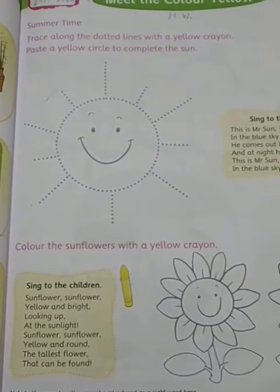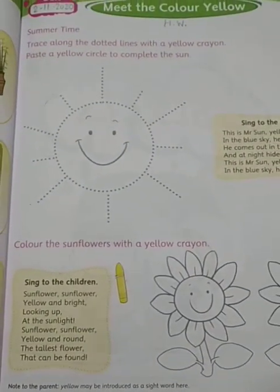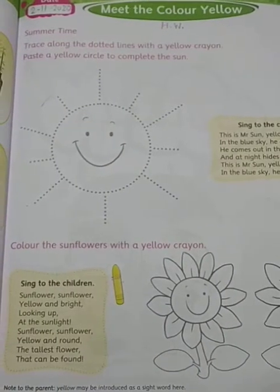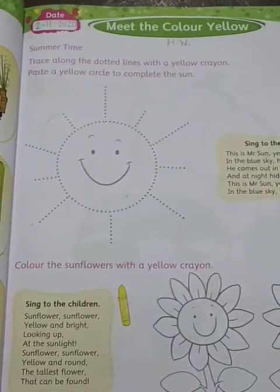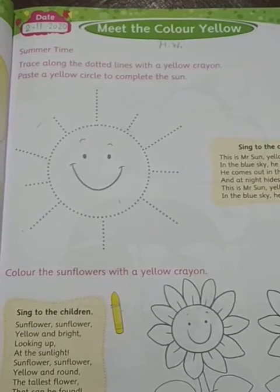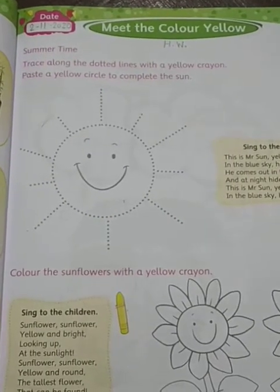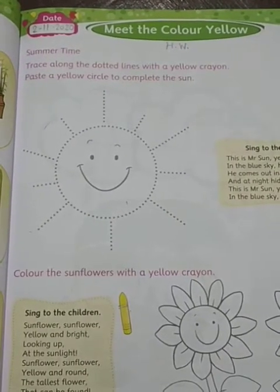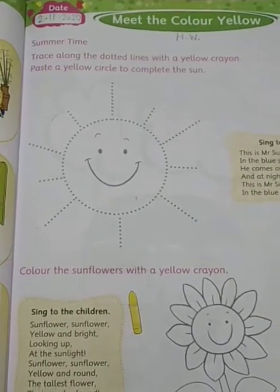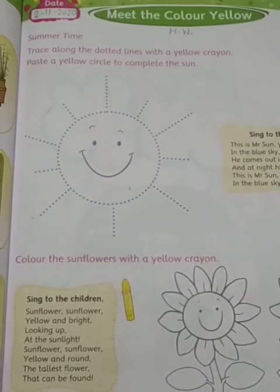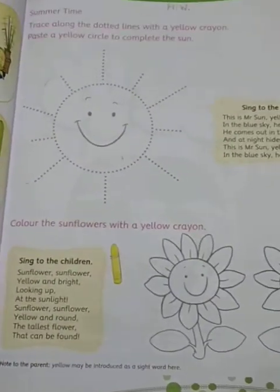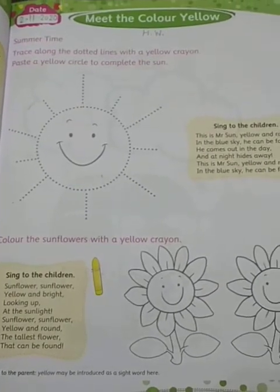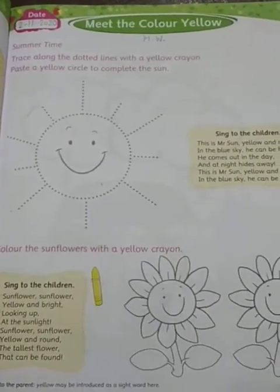Now think about some objects that you have seen in yellow color. The first one is the sun — the sun is always yellow. There are some fruits which are yellow: your favorite fruit mango is yellow, and banana is also yellow. The sunflower is also yellow, and balloons and balls can be yellow too. There are so many things that are yellow in color, and you may also have dresses in yellow.